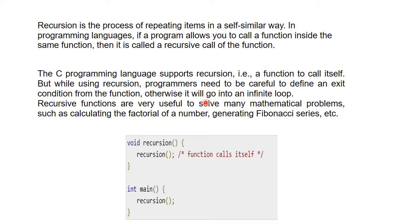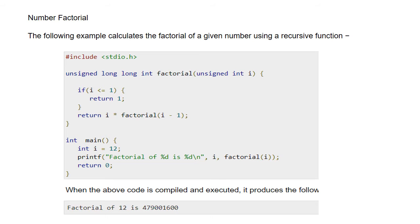आज हम इन दोनों programs — factorial of a given number और Fibonacci series — इन दोनों को recursion द्वारा बनाना सीखेंगे। नीचे एक उदाहरण दिया है: जब कोई function खुद को call करता है तो इस अवस्था को recursion कहा जाता है। मैंने void recursion() function declare किया है जिसके अंदर खुद को call किया है। जब main के अंदर recursion लिखेंगे तो यह अनंत तक चलता रहेगा — यह सिर्फ recursion की basic अवस्था दर्शाता है।